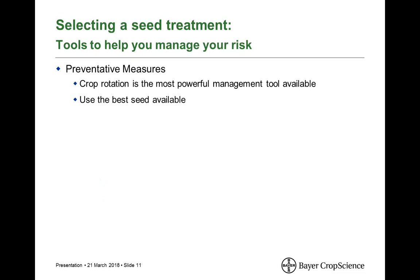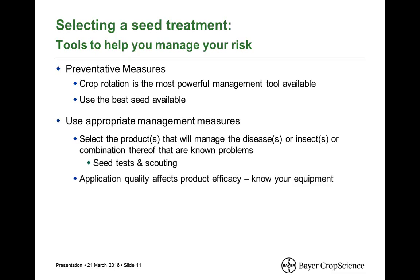Some tools to help manage your risk: preventative measures are great and will be a recurring theme. Crop rotation is the most powerful management tool available to you — it's not a seed treatment, but it is the most important thing you can do from a management perspective. Use the best seed available to you. When selecting appropriate measures, choose a product that manages the disease or insects you know you have a problem with, based on your seed test and previous scouting. Application quality will also affect product efficacy — if you don't do a good job applying it, you won't get your return on investment.